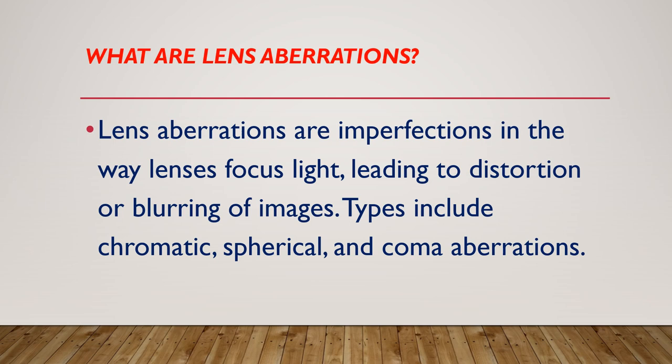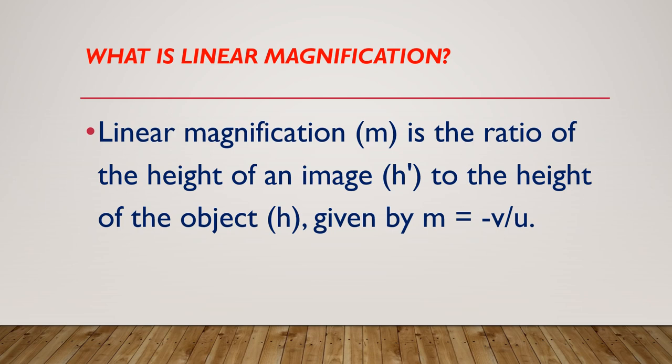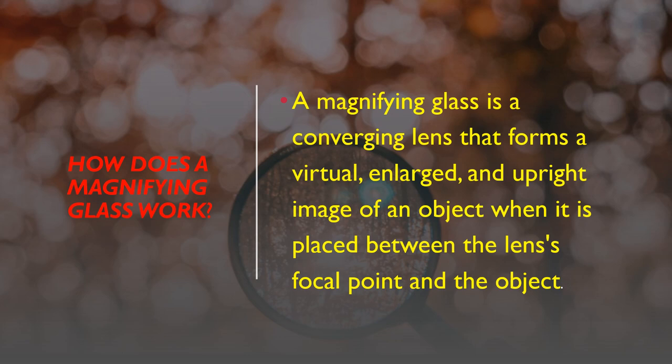What is Linear Magnification? Linear Magnification is the ratio of the height of an image to the height of an object, given by M = −V/U.